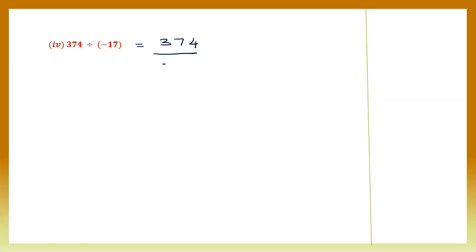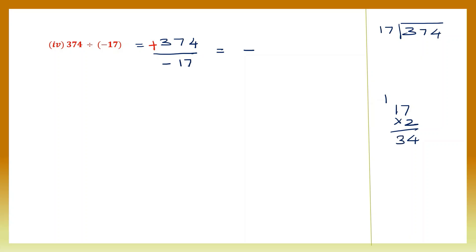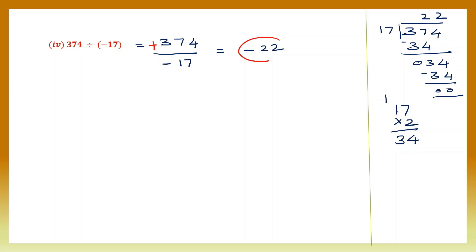Question 4: 374 divided by minus 17. 374 doesn't have a sign so let's put the plus sign. Signs are different, so the answer is going to be negative. Dividing 374 by 17: we need a number close to 37, so 17 twos are 34. Subtract — bring down 4 to get 34 again, subtract to get remainder 0. Quotient is 22, so the final answer with the sign is minus 22.